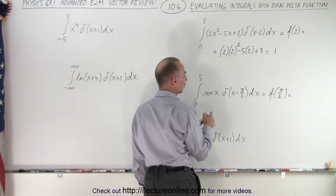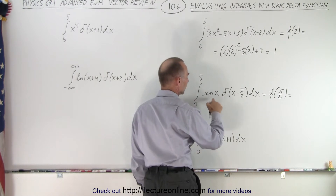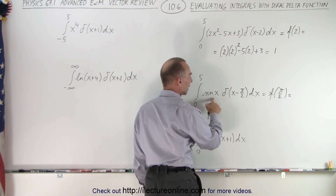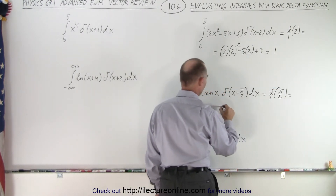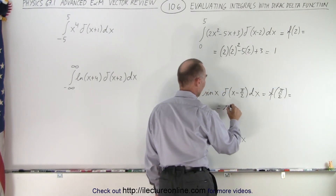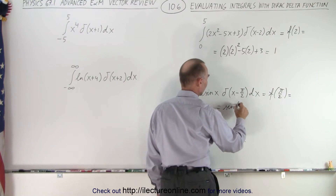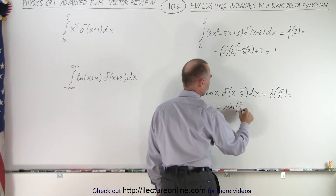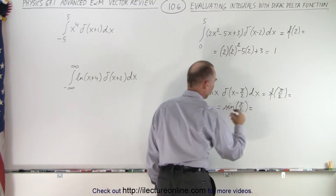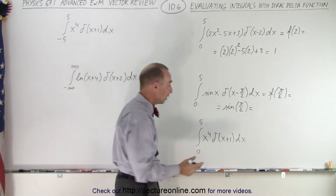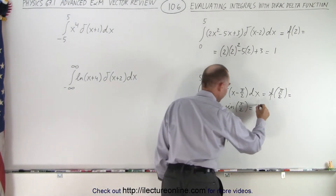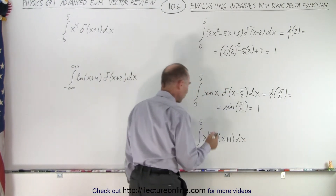Over here, this is going to be the function evaluated at pi over 2. So this is equal to the sine of x at pi over 2. And of course, sine at pi over 2, which is 90 degrees, is equal to 1.